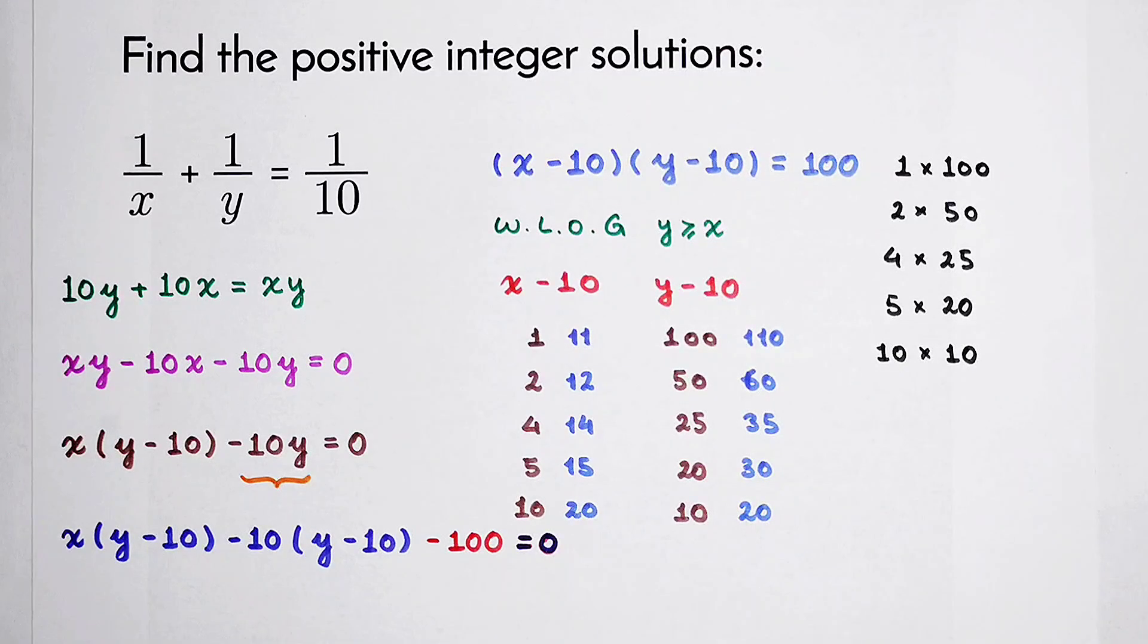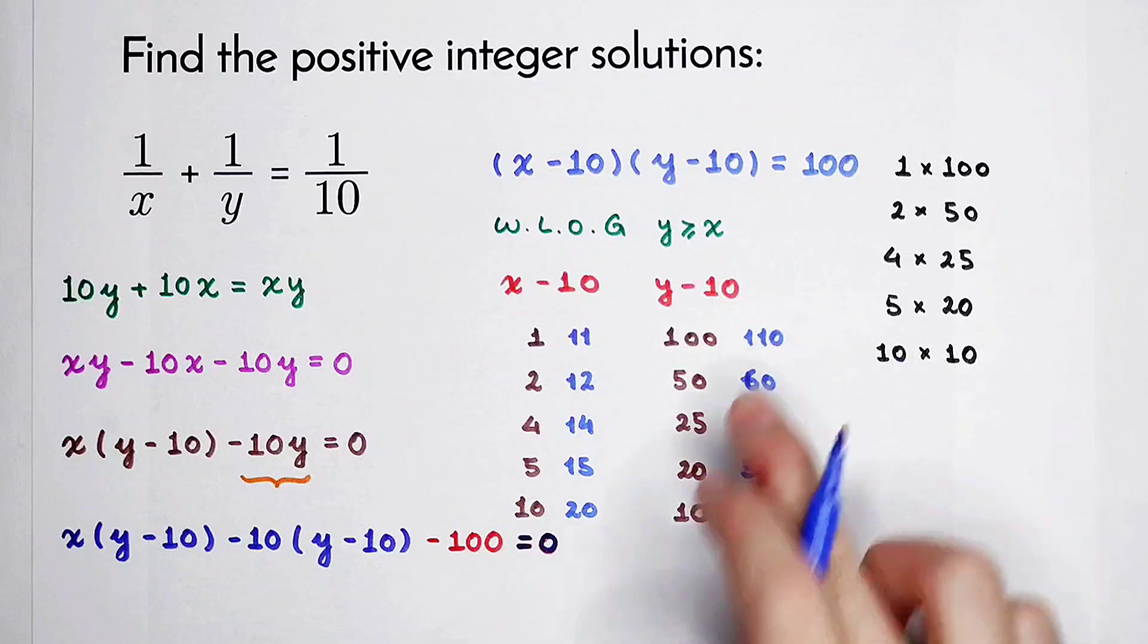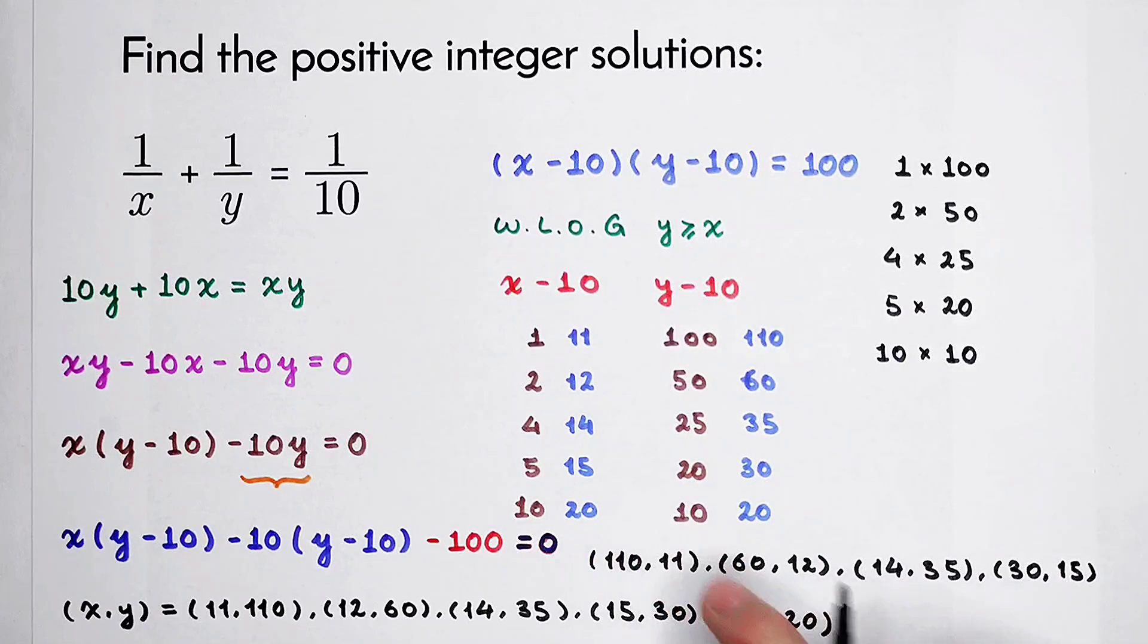And the order of each of these solutions can be switched. So we have 9 solution pairs in total. Don't forget to give them a thumbs up. Subscribe to my channel for more videos. And until next time, bye-bye.